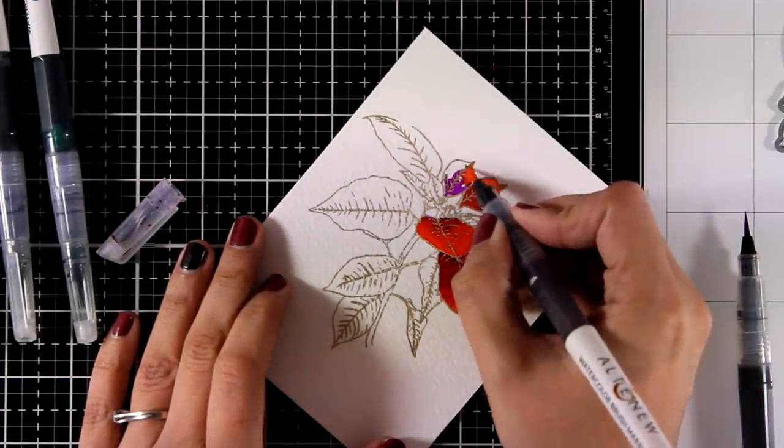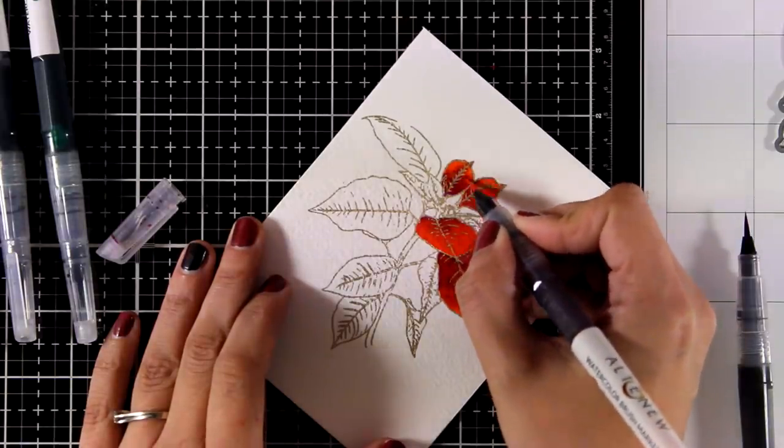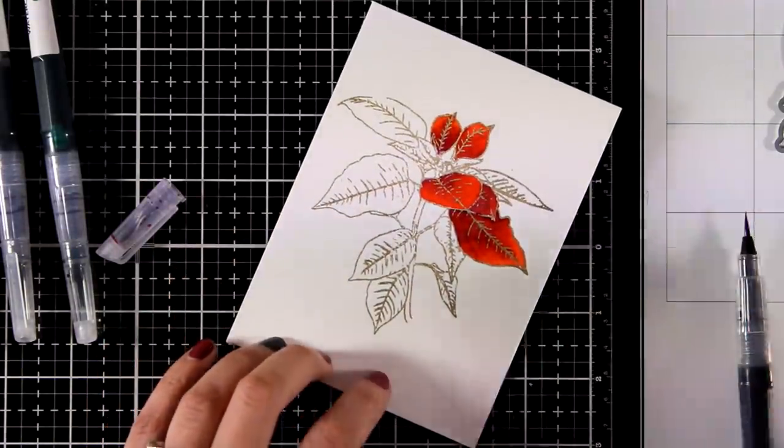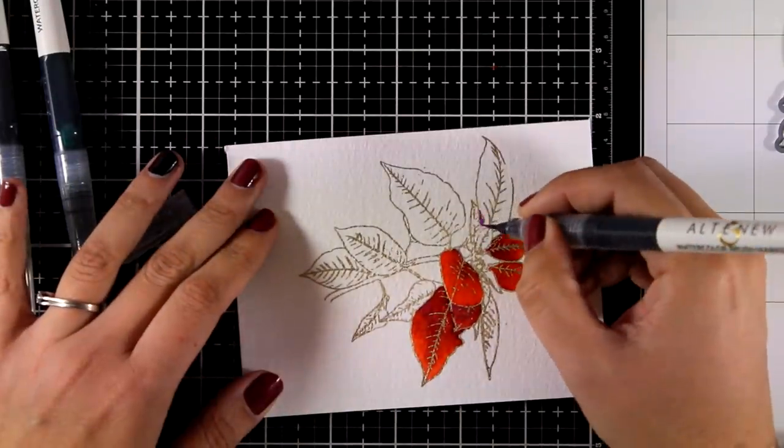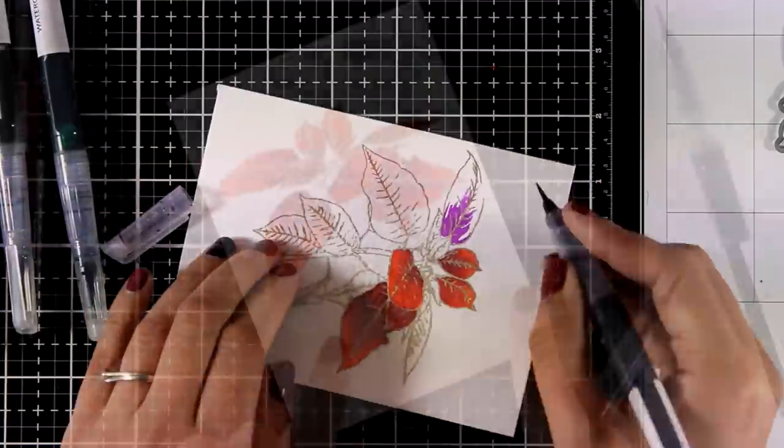This set of watercolor brush markers comes with 10 colors, but don't forget that you can mix colors together to get different shades. So like here, I wanted a darker shade of red, but it's easy to do that with my violet.